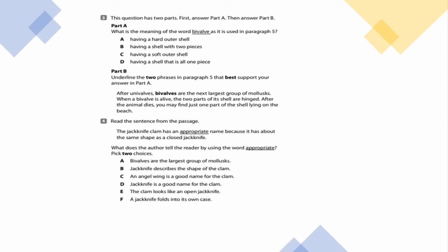Number three also has two parts. Part A: What is the meaning of the word bivalves as used in paragraph five? Is it A, having a hard outer shell; B, having a shell with two pieces; C, having a soft outer shell; or D, having a shell that is all one piece? I hope you found your best answer.